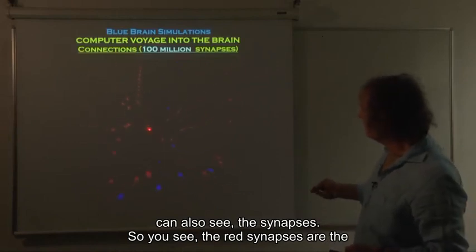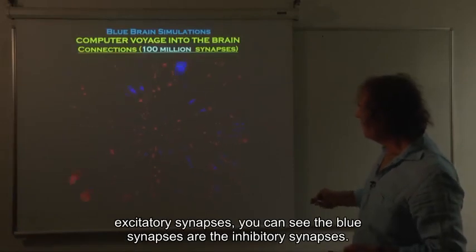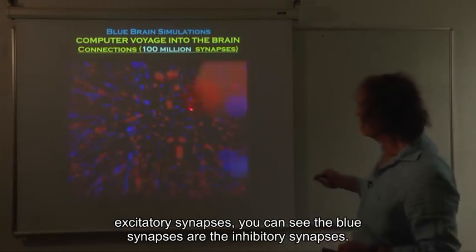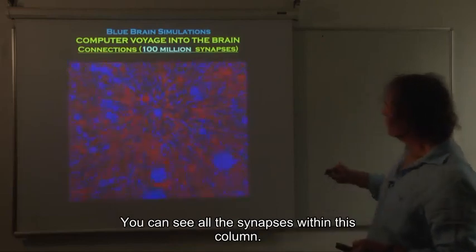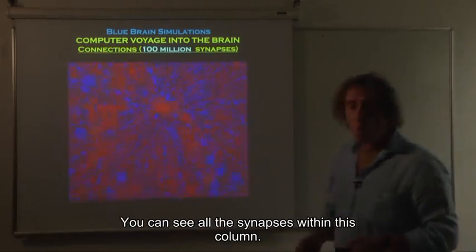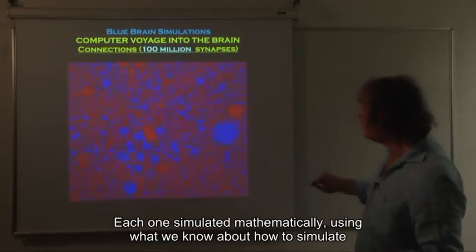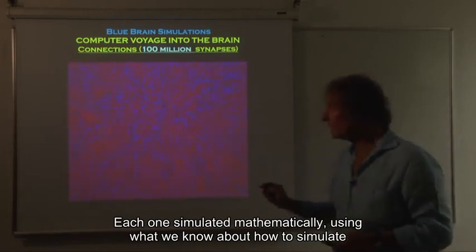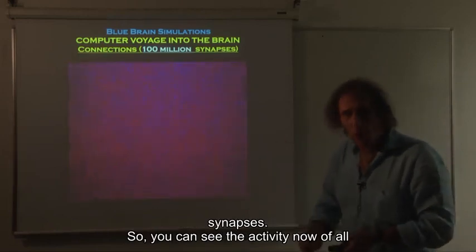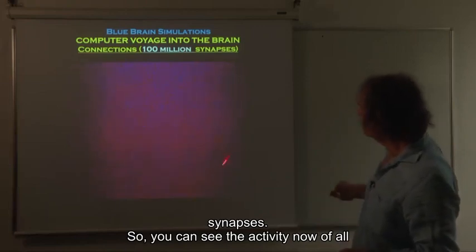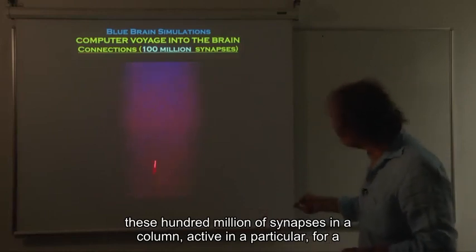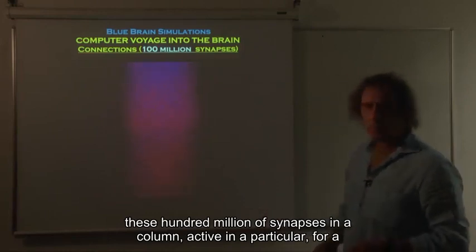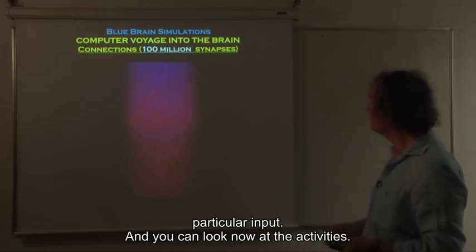And you can also see the synapses. So you see the red synapses are the excitatory synapses. You can see the blue synapses are the inhibitory synapses. You can see all the synapses within this column. Each one simulated mathematically using what we know about how to simulate synapses. So you can see the activity now of all these hundred million of synapses in a column, active for a particular input.